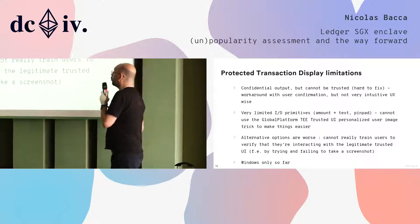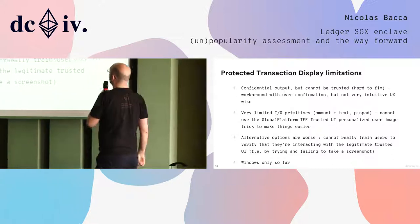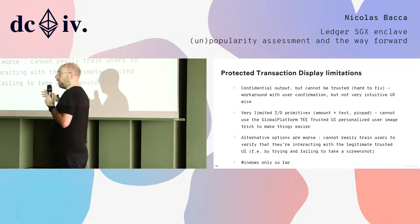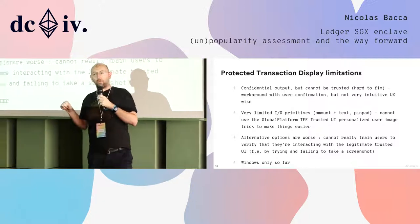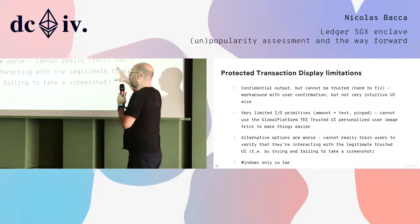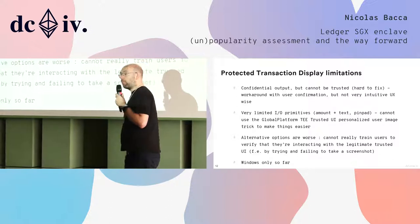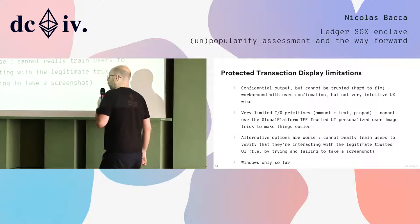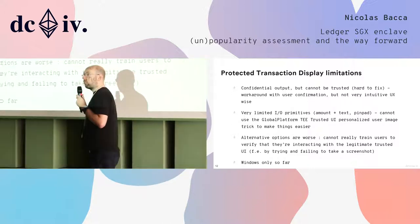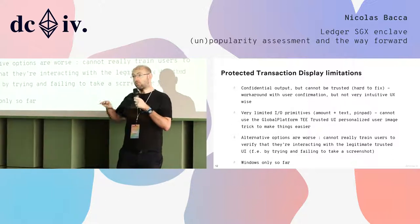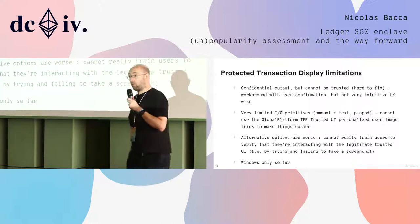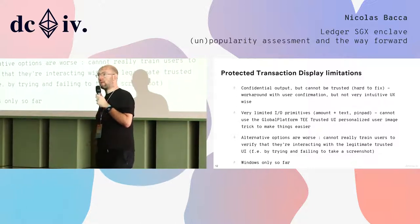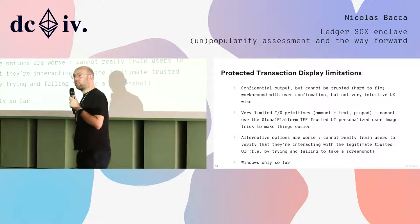The limitations we have with PTD today are that the output is confidential — it cannot be spied on — but it cannot be trusted, because you can still display something on top of the output. That's why you have to do user confirmation twice, which is not the best UX possible, but it works with what is available. The I/O primitives are very limited today, and you don't have the flexibility of Global Platform TEE Trusted UI. One popular use of this API is to register an image on a server and then display that image, so nobody can intercept it and malware can't replace the trusted UI.